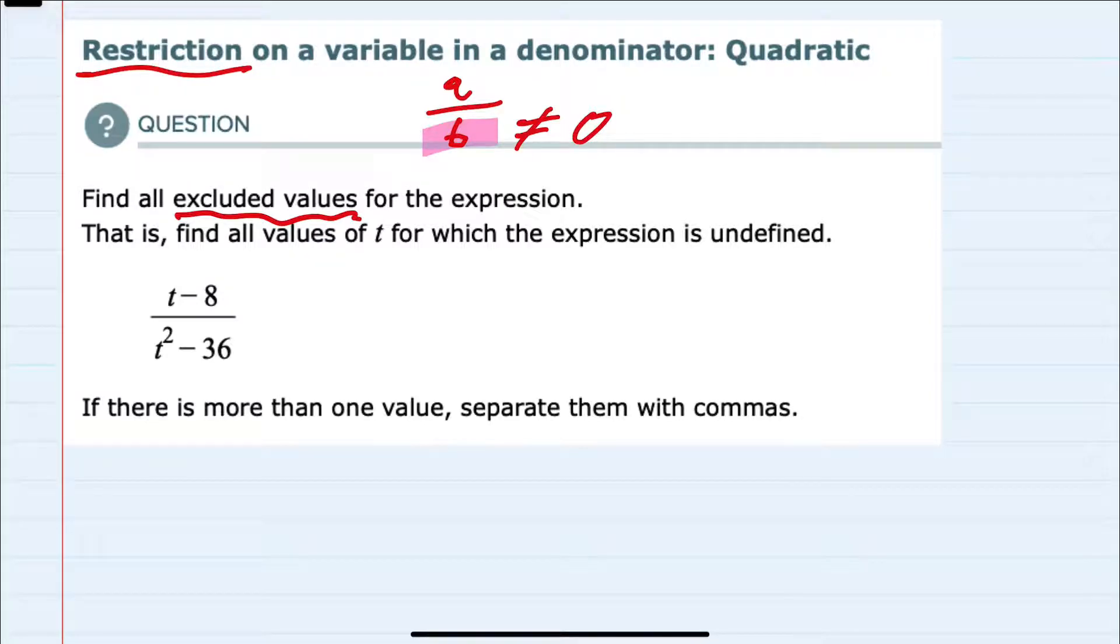And in this expression, the denominator t squared minus 36 cannot be equal to 0. So to find those excluded values, I'm going to set the denominator t squared minus 36 equal to 0.